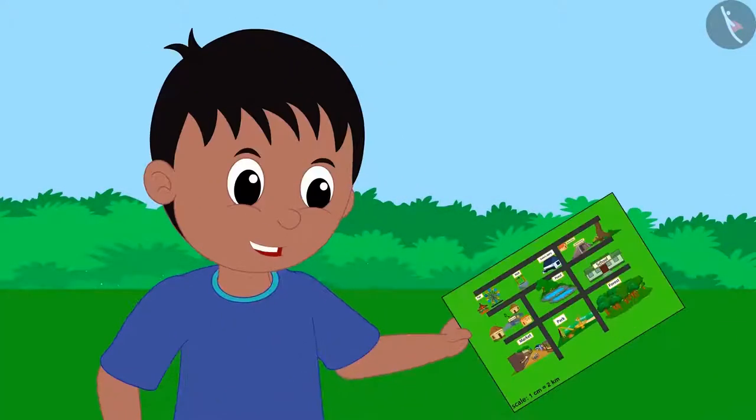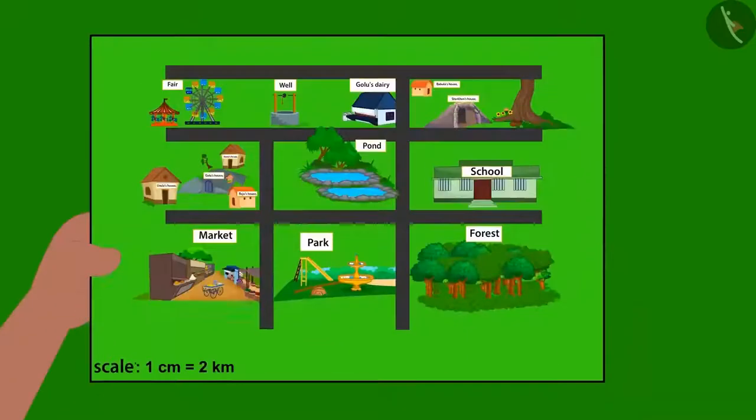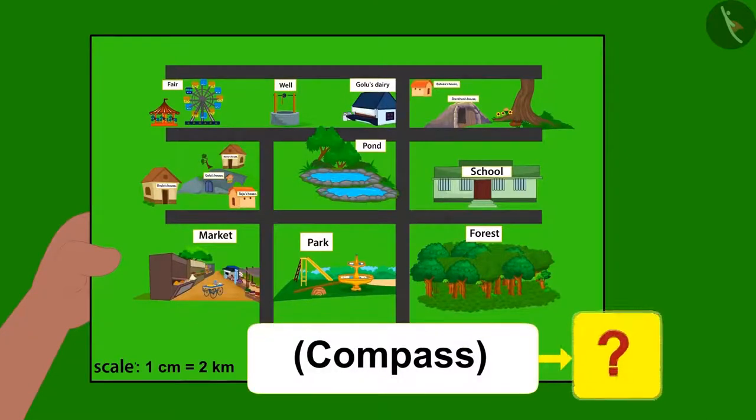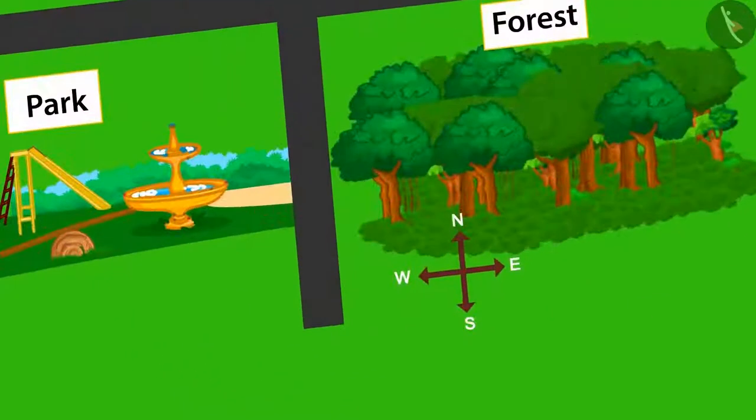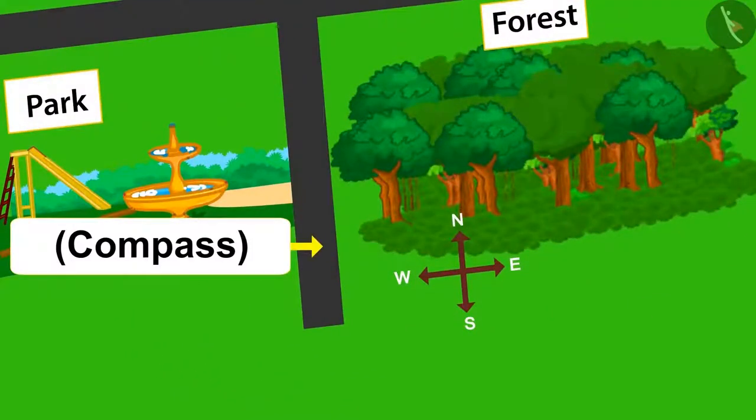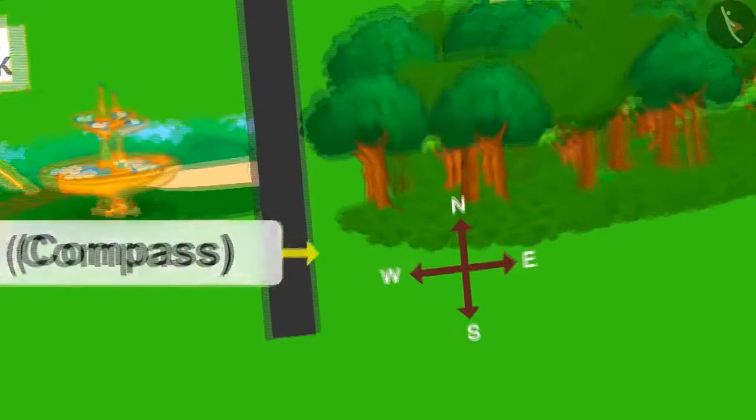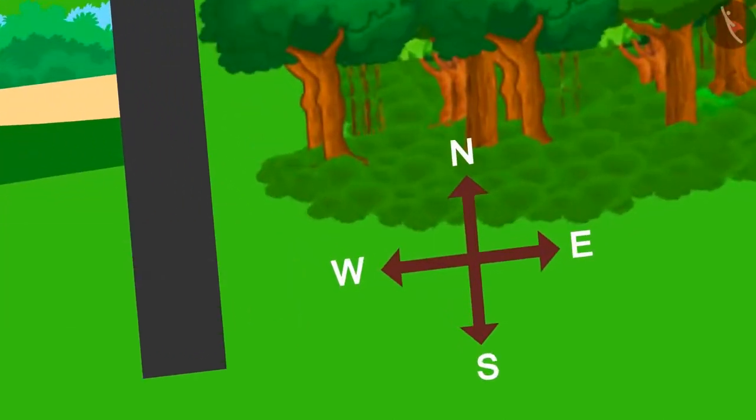Then Raju took a look at Bablu's map. Now I get it. There is no compass given on your map. But take a look. A compass like this is given on every map. Saying this, Raju showed Bablu the compass drawn on his map.